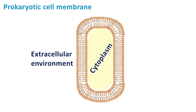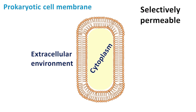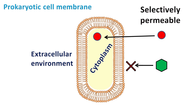The cell membrane is a selectively permeable membrane. This means that it allows only the movement of particular molecules and restricts the movement of other molecules. The selectively permeable nature also prevents the movement of important molecules present in the cytoplasm to the external environment.